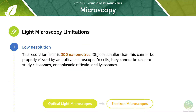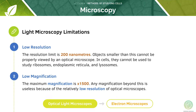Now let's look at some limitations. Because optical microscopes use normal white light, the limit of their resolution is around 200 nanometres. In cells, this means that optical microscopes cannot be used to properly study ribosomes, endoplasmic reticulum and lysosomes. The maximum magnification is 1500, and any magnification above this is useless because of the relatively low resolution of optical microscopes.